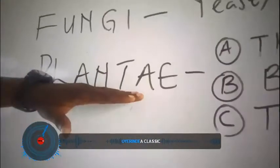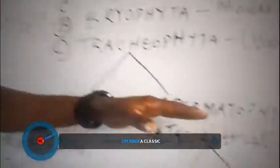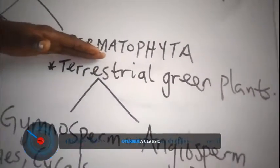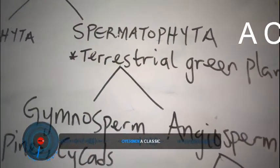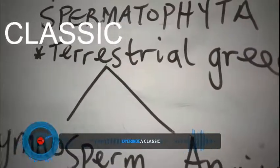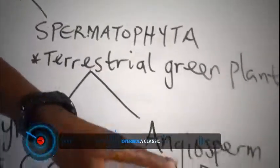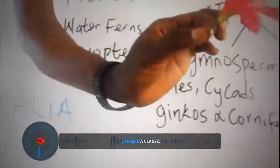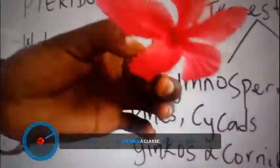Under Plantae we said we have Spermatophyta, which are flowering plants. So under these terrestrial green plants, the flowering plants, we have many. Under the Angiospermae, you may be given the Hibiscus flower.